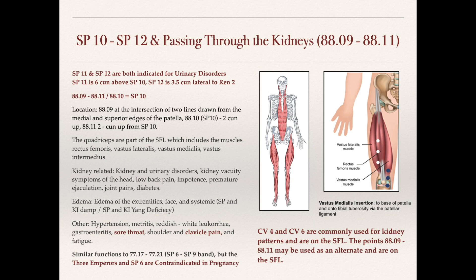Let's start by talking about spleen 10, spleen 11, and spleen 12. Spleen 10 is two sun above the medial superior border of the patella, and this point overlaps with Master Dung point 88.10. As we've been discussing, Master Dung points are used in sets of three when needled on the legs and thighs. Point 88.09 is located right at the intersection of two lines drawn from the medial and superior edges of the patella — essentially at the edge of the patella — and then two sun above that is spleen 10 or 88.10.